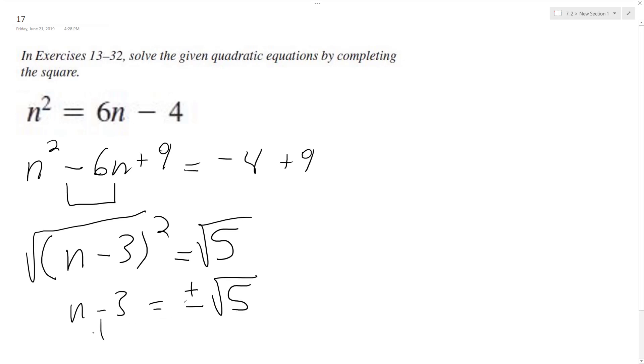And then we add 3 to both sides. So our final result is n is equal to square root of 5 minus... I'm sorry, plus 3, and square root of 5 plus 3. And that's it.